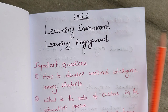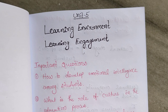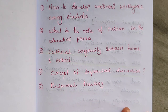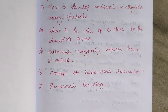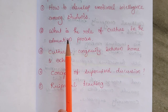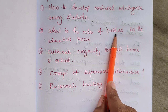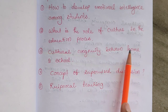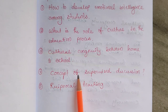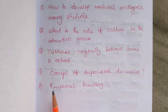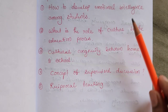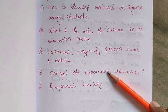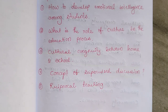Friends, what are the important questions from this unit? How to develop emotional intelligence among students, what is the role of culture in the education process, cultural congruity between home and school, the concept of supervised discussion, and reciprocal teaching. These five questions are important — please see these five questions before going to the exam.